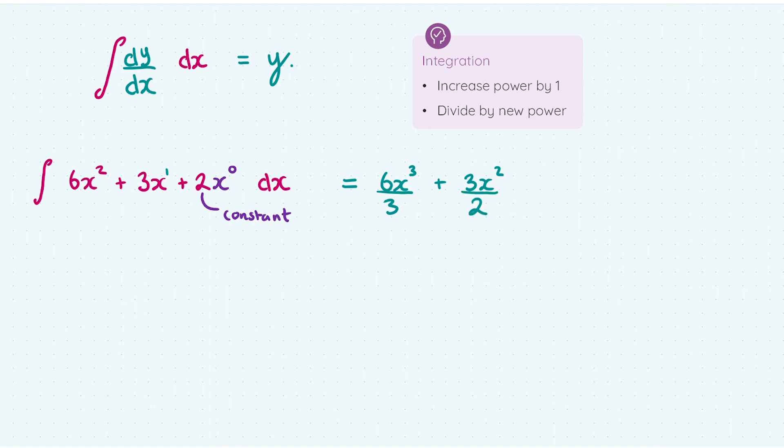And then for 2x⁰, I increase the power by 1. So I get 2x¹, which I don't write. And then we could divide that by 1. But I'm never going to divide by 1 because it's just going to stay the same. So it's pointless doing that. So get rid of that.